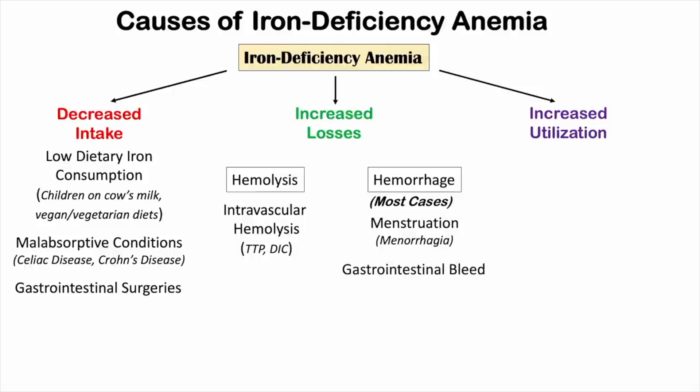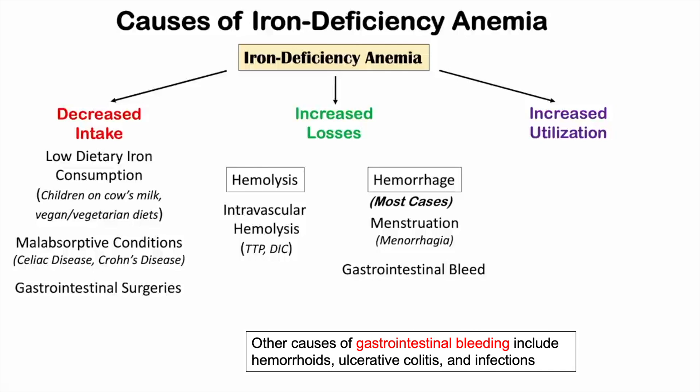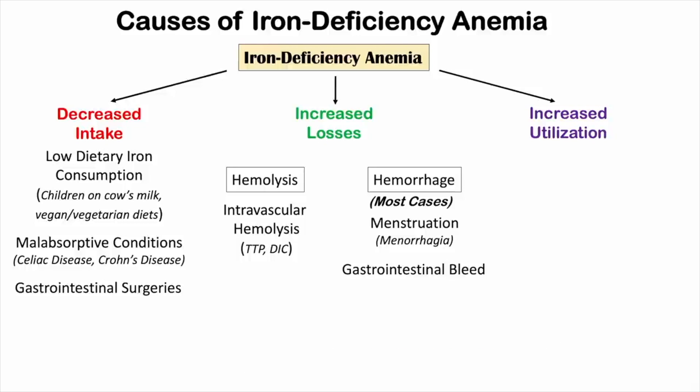Gastrointestinal bleeding is the second most common cause of iron deficiency anemia overall. Whereas menstruation is the most common cause in reproductive-age women, in older patients or male patients, gastrointestinal bleeding is the most common cause. Sources of GI bleeding include peptic ulcer disease, colorectal cancer, celiac disease, and other conditions causing bleeding in the GI tract. This is also the most common cause in postmenopausal women.